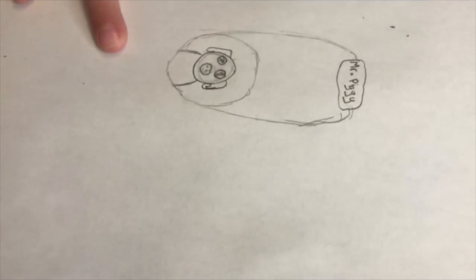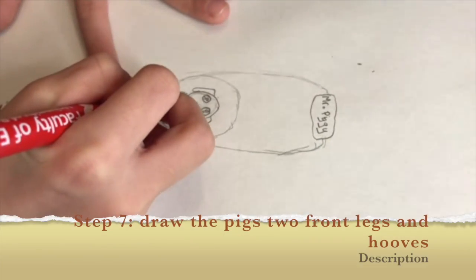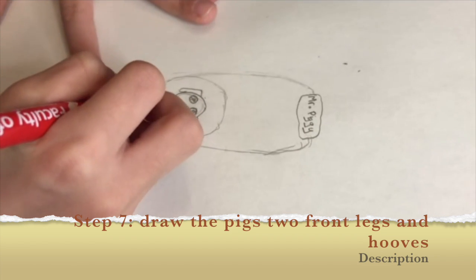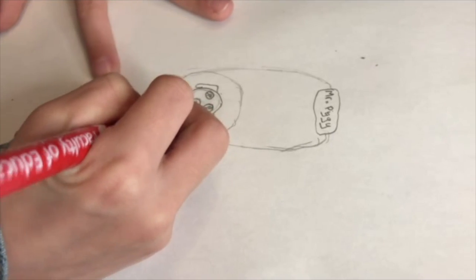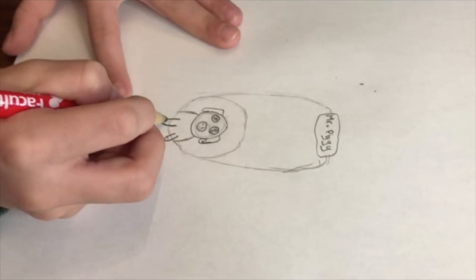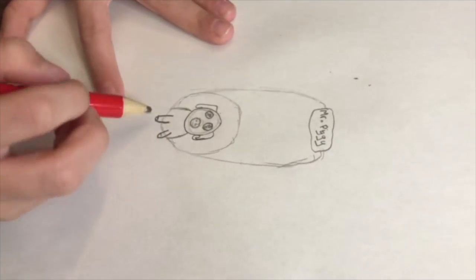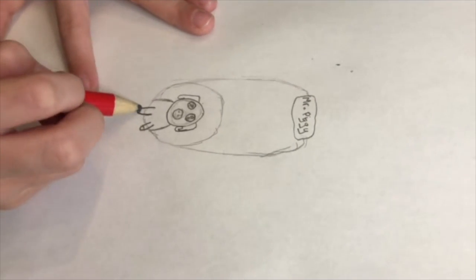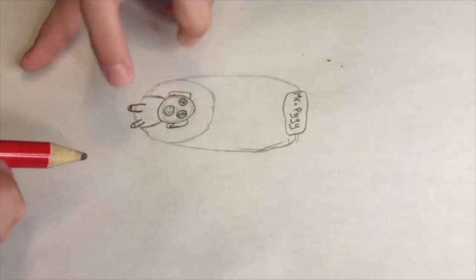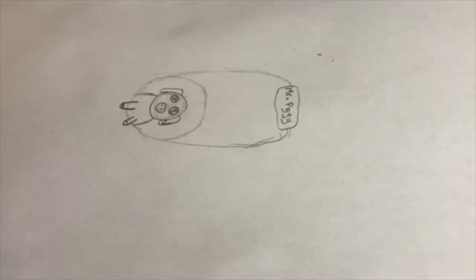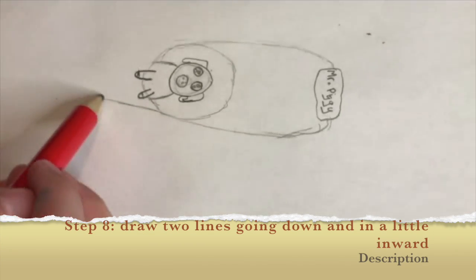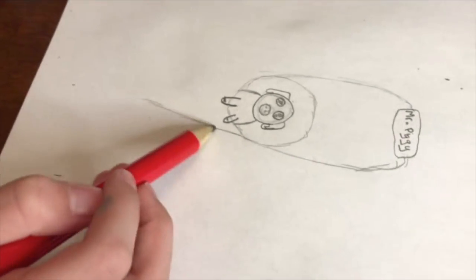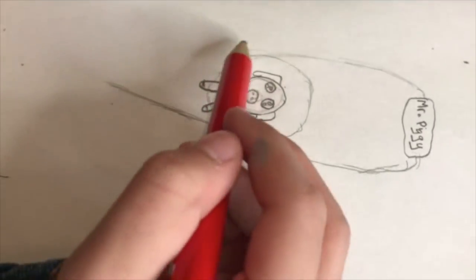And then another step is you have to make its front legs. You're not doing the back legs because they're in the bucket. For that, you just have to go down, down, and make kind of a line there. As you can see, my pig's pretty chubby.